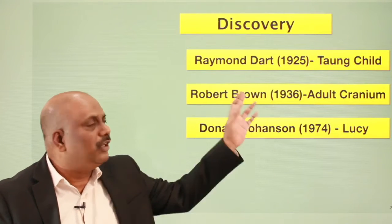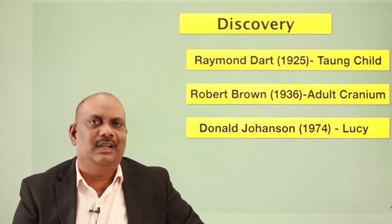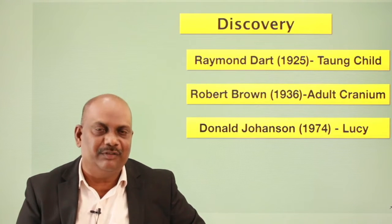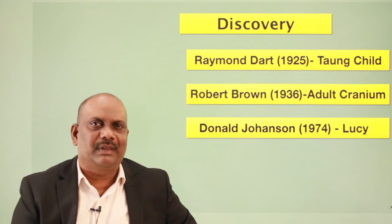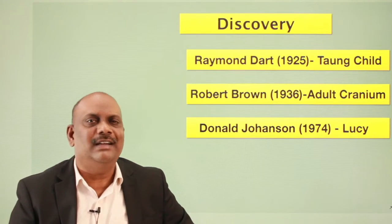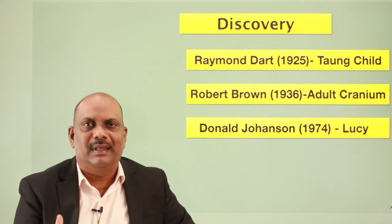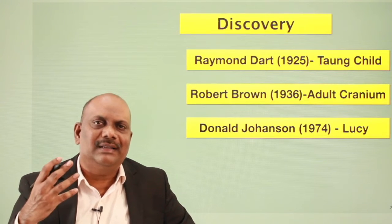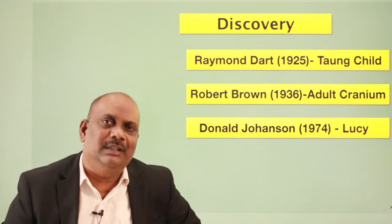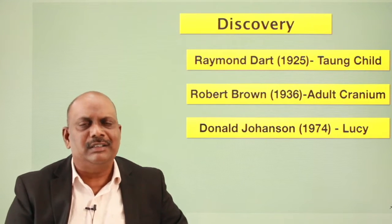The first important discovery: in the year 1924, a few mine workers were working in a limestone quarry at a place called Taung, near Johannesburg in South Africa. They discovered the fossil of a small baby. It was displayed at many places and eventually reached Raymond Dart through his student, who found it and recognized it as a very important fossil.